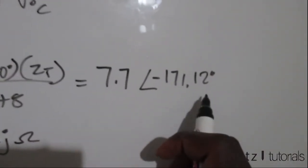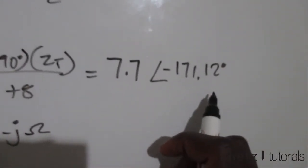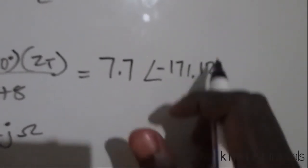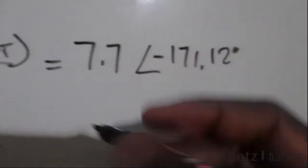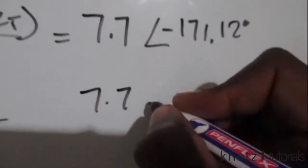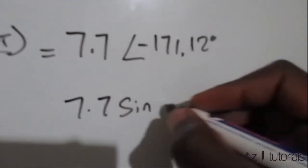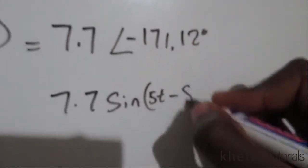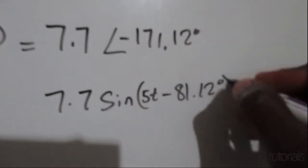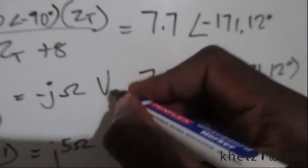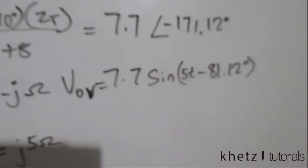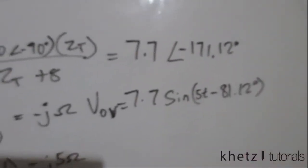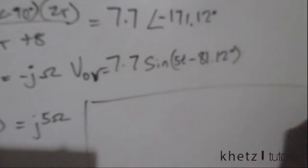That result is in cosine form. If you check the textbook it's given in sine form. To convert, you simply add 90 degrees to the angle. So in sine form, the contribution of the voltage source is 7.7 sine of 5t minus 81.12 degrees. These two expressions are equivalent — one is cosine form, the other is sine form. Now let's move on to find the contribution of the current source.